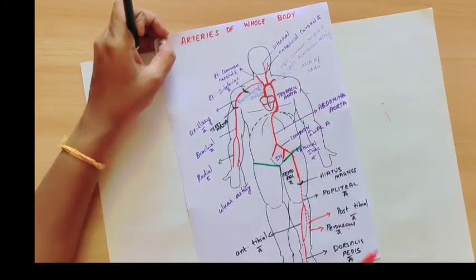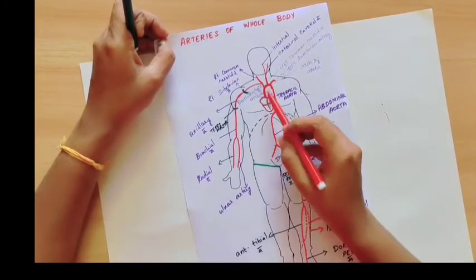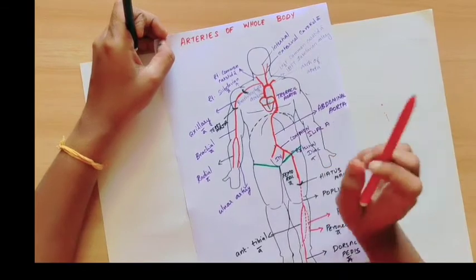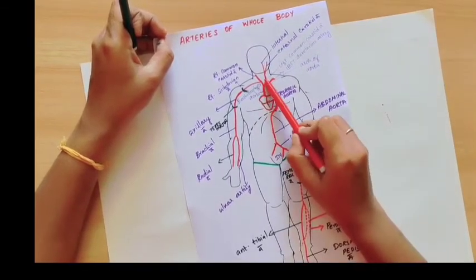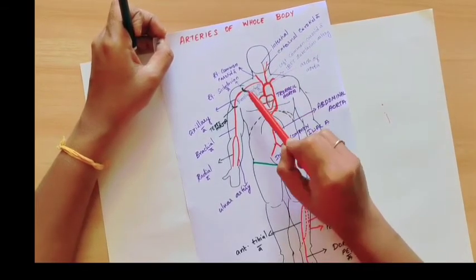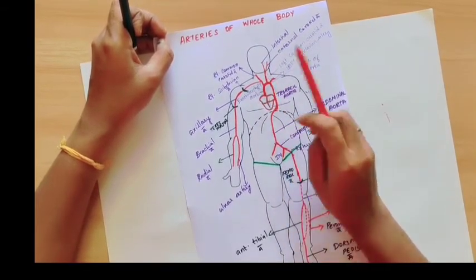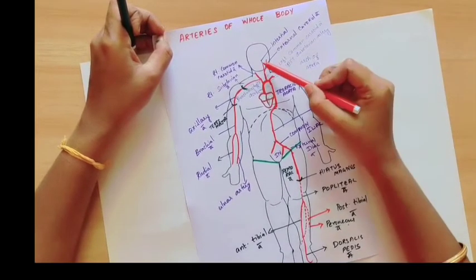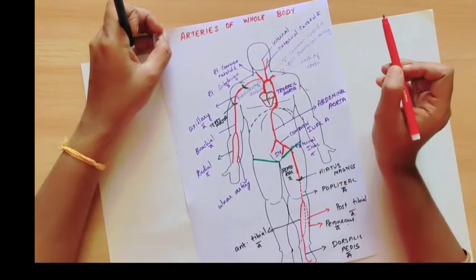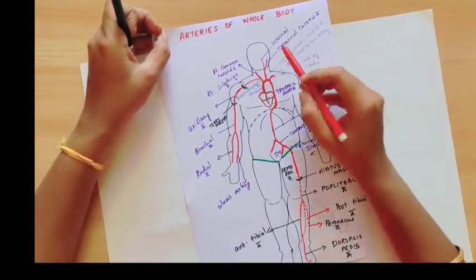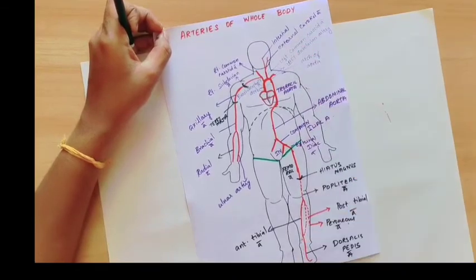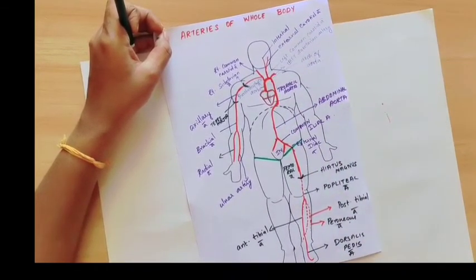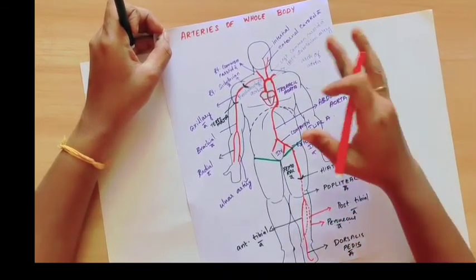To recap: the brachiocephalic artery divides into two — the right subclavian artery and the right common carotid artery. In both the left and right common carotid arteries, they ascend and divide into the internal carotid artery and the external carotid artery. The internal carotid artery supplies the brain and eyes, while the external carotid artery supplies the face, scalp, and nose.